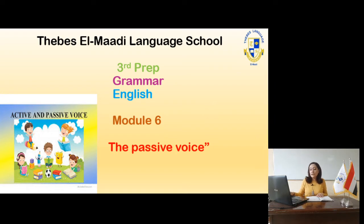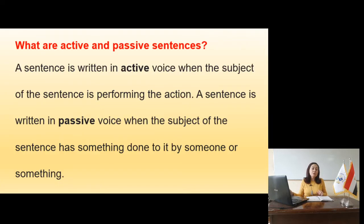Looking at the presentation, slide 2, we have to know the difference between active and passive. A sentence is written in active voice when the subject of the sentence is performing the action. A sentence is written in passive voice when the subject of the sentence has something done to it by someone or something.